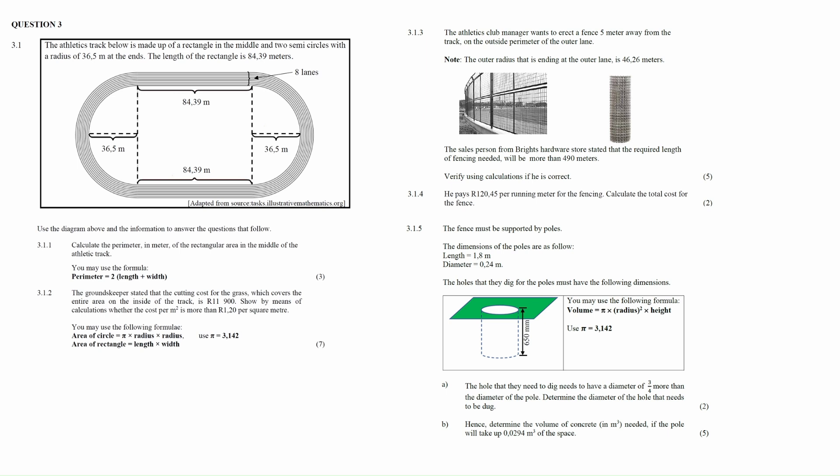Question 3.1 consists of five measurement questions and one combination of finance and measurement questions, designed to assess your understanding of perimeters and areas of rectangles and circles, and volumes of cylinders.